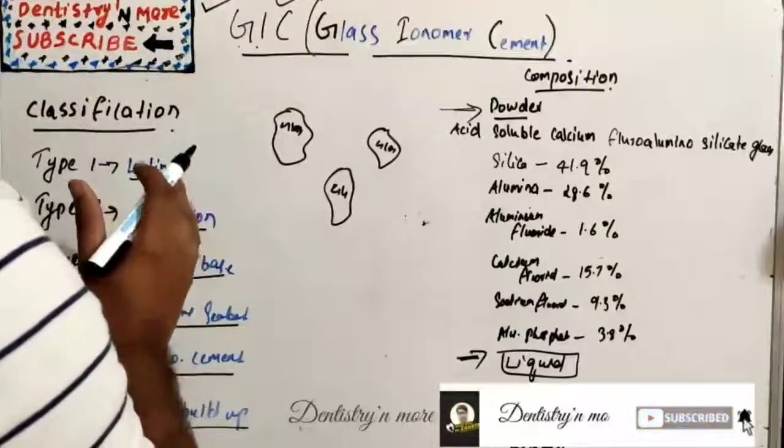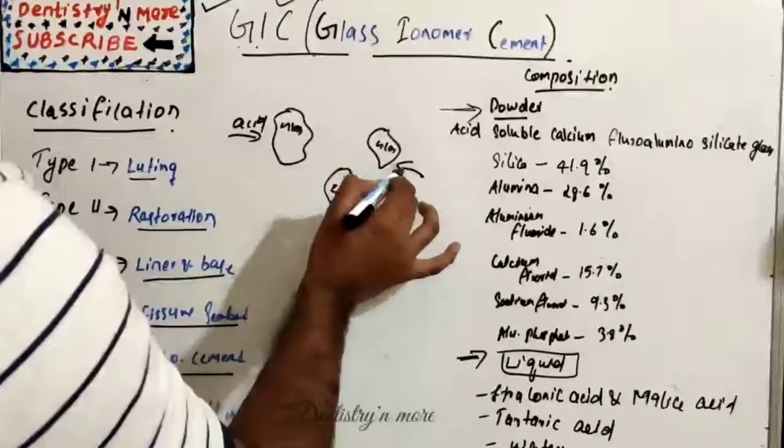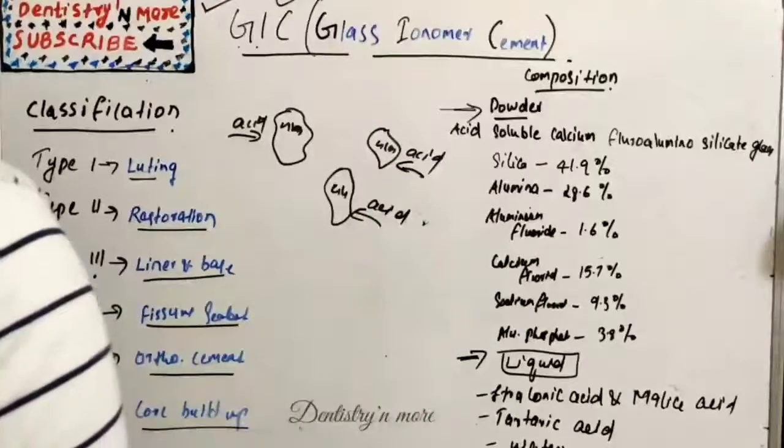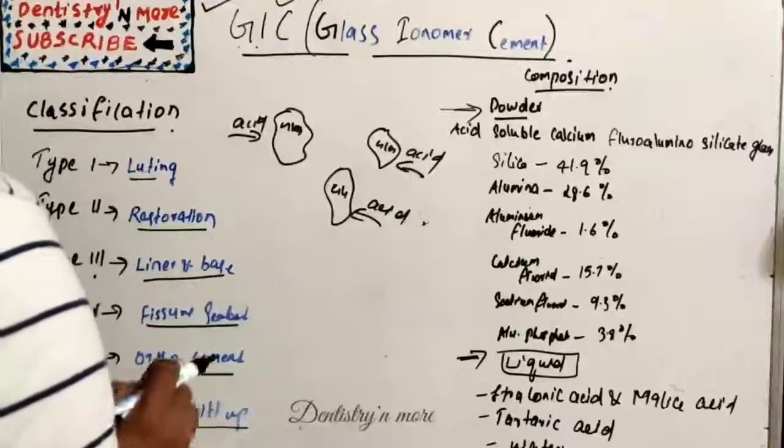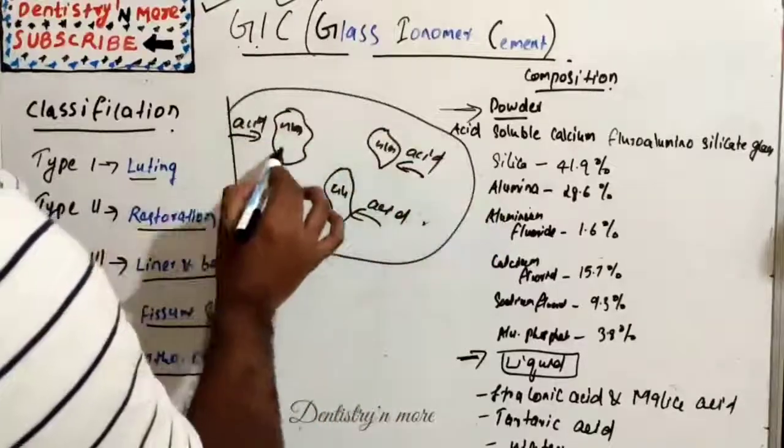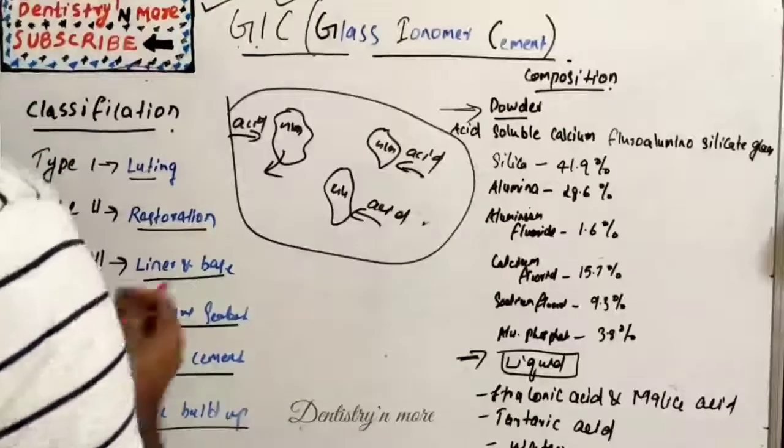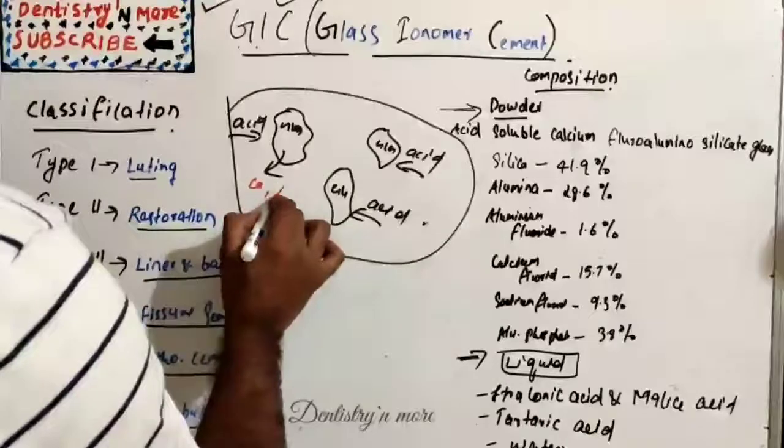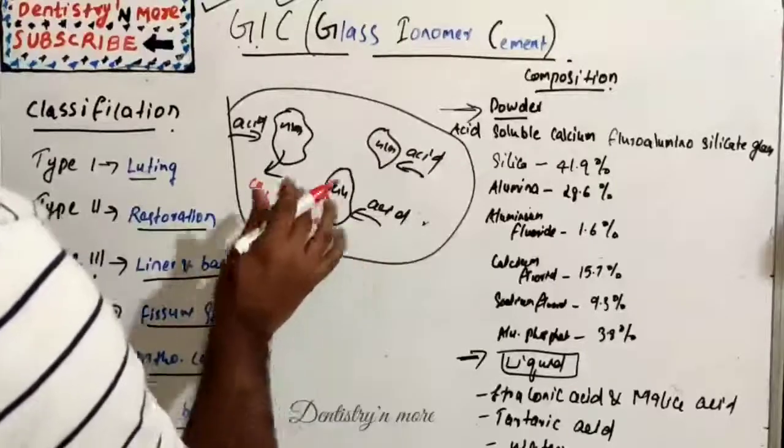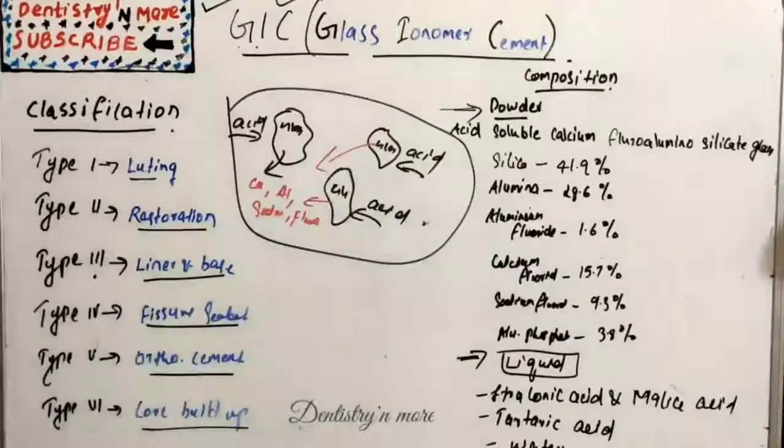There will be acid attack, so calcium, aluminum, sodium, and fluoride ions are leached into the aqueous medium. So if this is the medium, there will be release of calcium, aluminum, sodium, and fluoride into the aqueous medium from all the glass particles.